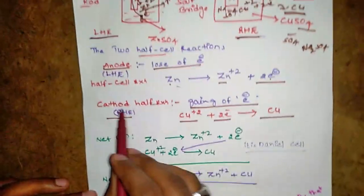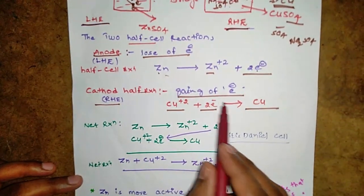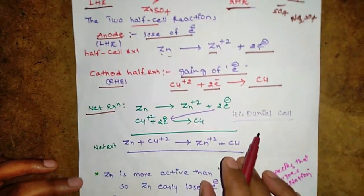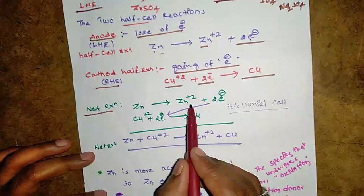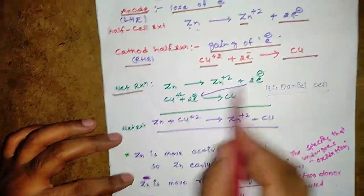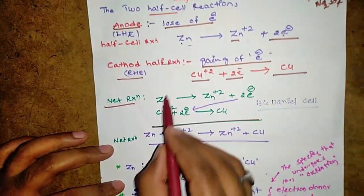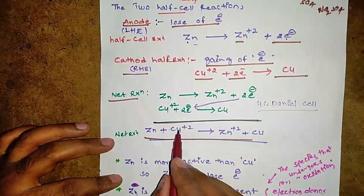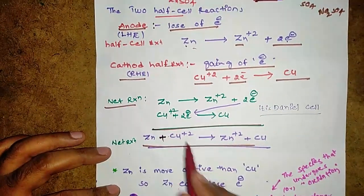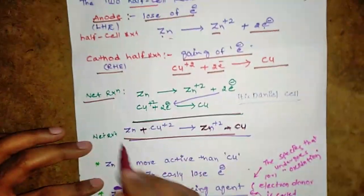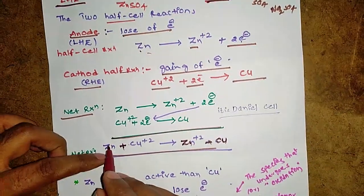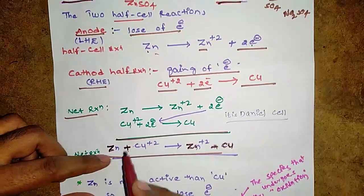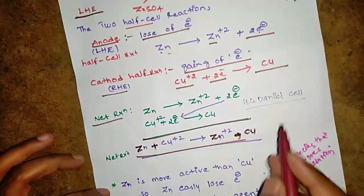The cathode reaction shows copper²⁺ gaining two electrons to form copper: Cu²⁺ + 2e⁻ → Cu. The net reaction combining anode and cathode is: Zn + Cu²⁺ → Zn²⁺ + Cu. Zinc loses two electrons which are taken by copper, forming Zn²⁺ and copper metal.